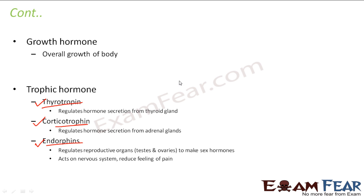Corticotrophin regulates hormone secretion from the adrenal glands, which is another endocrine gland. Endorphins regulate the reproductive organs — testes and ovaries — to produce sex hormones. So the pituitary gland has control over the thyroid gland, the adrenal gland, the testes, and the ovaries, and that is why the pituitary gland is known as the master gland.